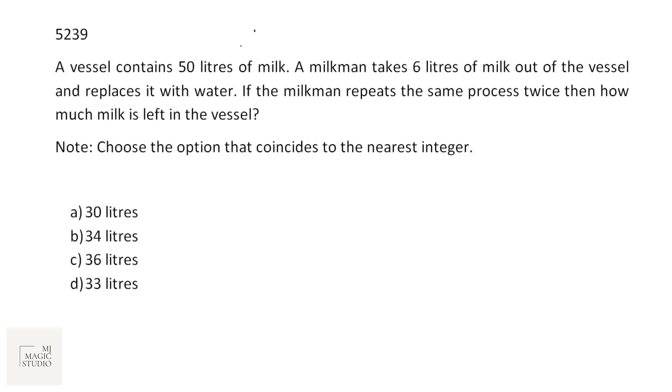In one of the previous sets we discussed this kind of question. A vessel contains 50 litre of milk. A milkman takes 6 litres of milk out and replaces it with water. That means fraction of mixture of the milk taken out is 6 by 50, that is 3 by 25. If the milkman repeats the same process twice, that means doing it 2 times, then how much milk is left? We use the same formula. Since everything in the vessel in the starting was milk and they're asking how much milk is left, then volume of milk left is volume of milk in the beginning into (1-f) to the power n.